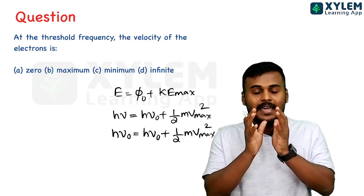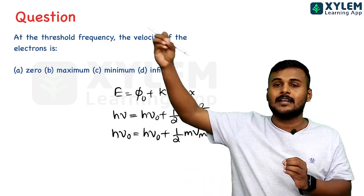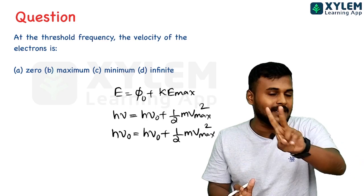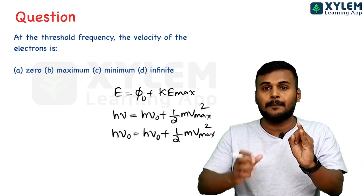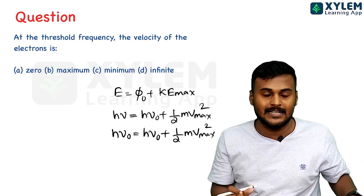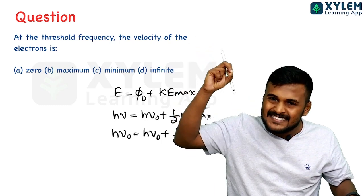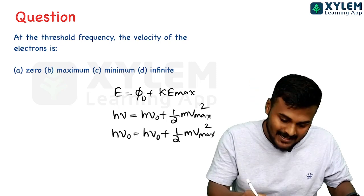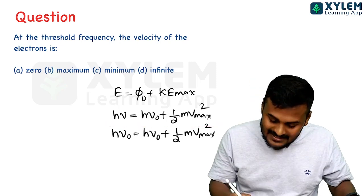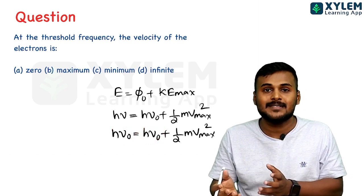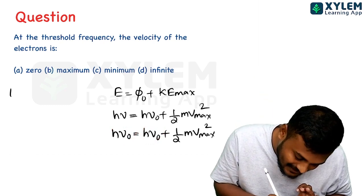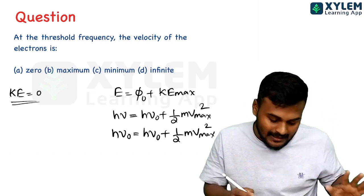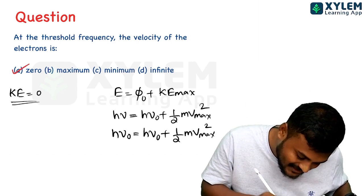If h-nu equals threshold frequency, h-nu-nought minus h-nu-nought equals zero, so kinetic energy maximum equals zero. Therefore velocity equals zero when the incident frequency equals the threshold frequency.